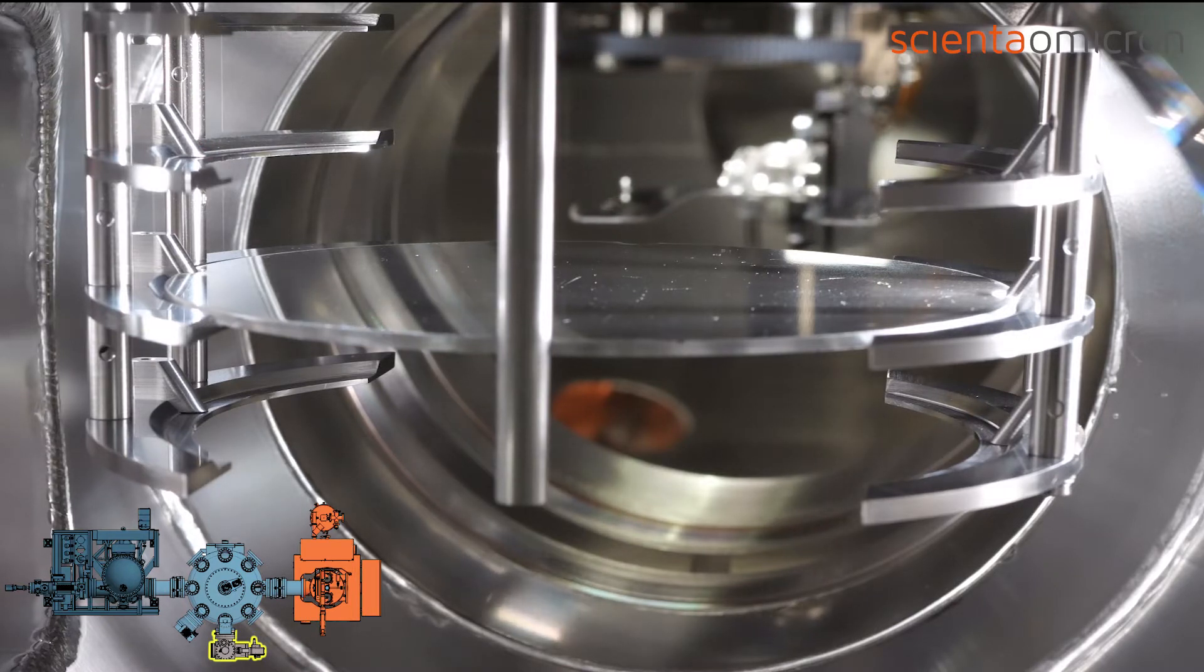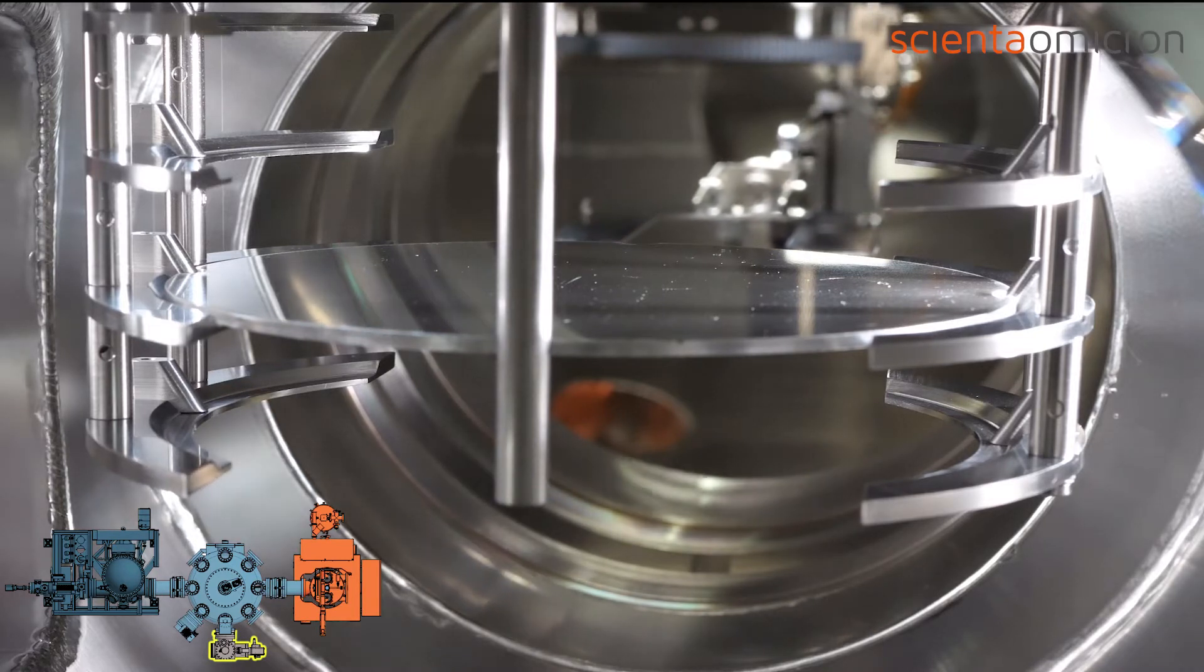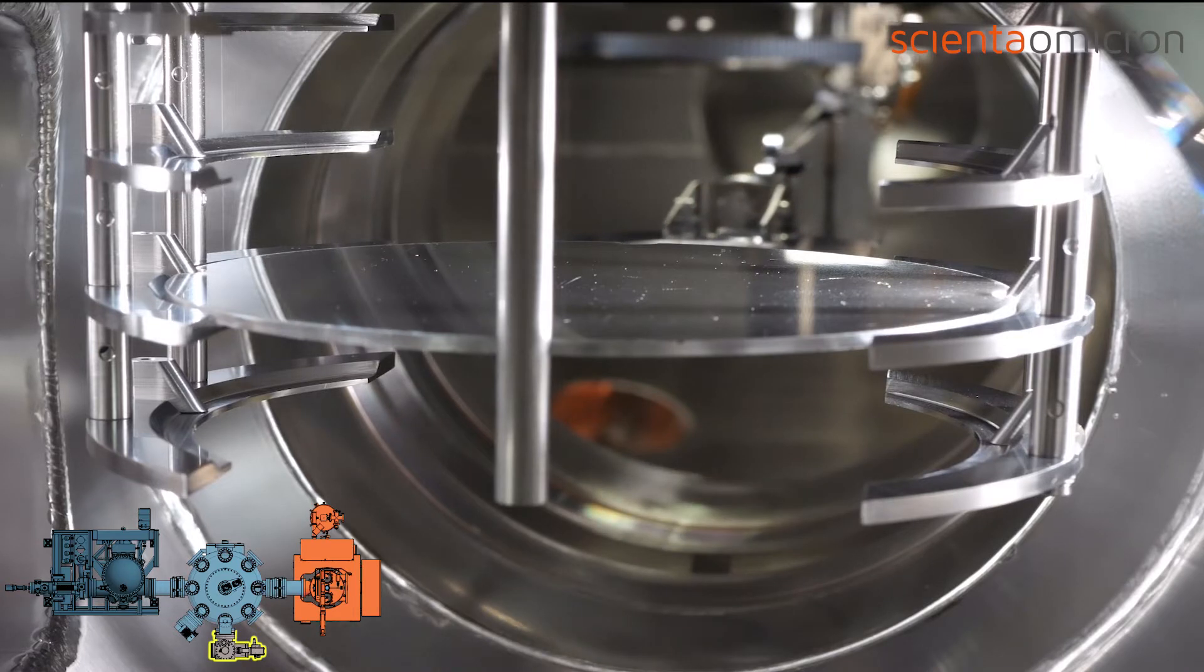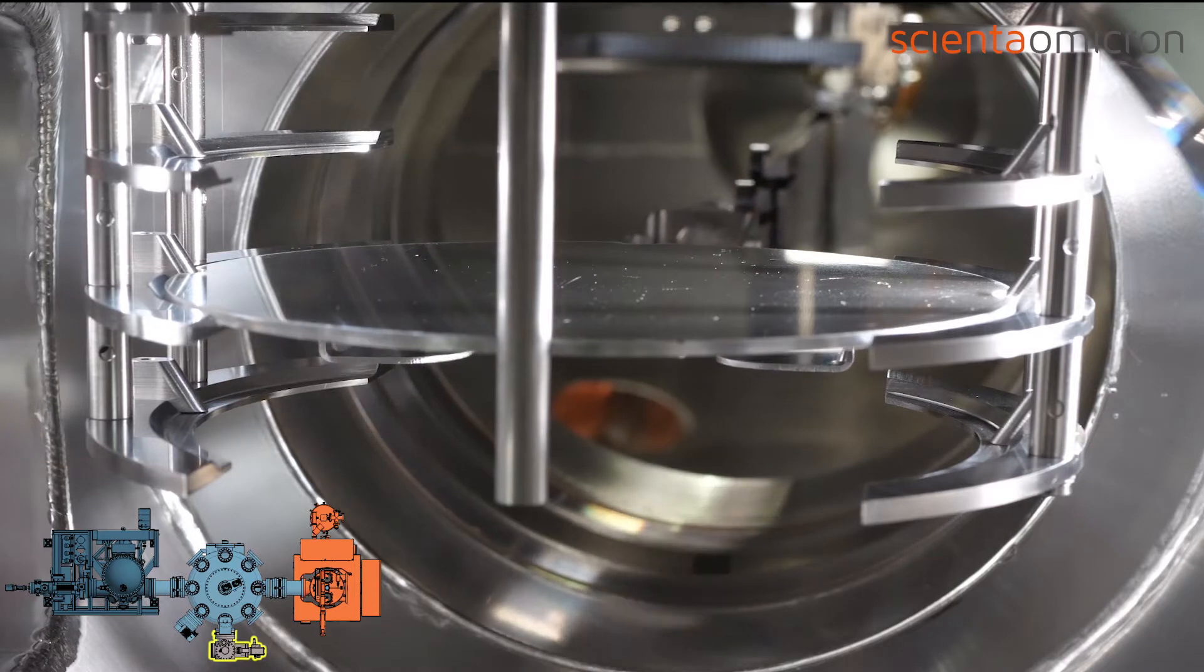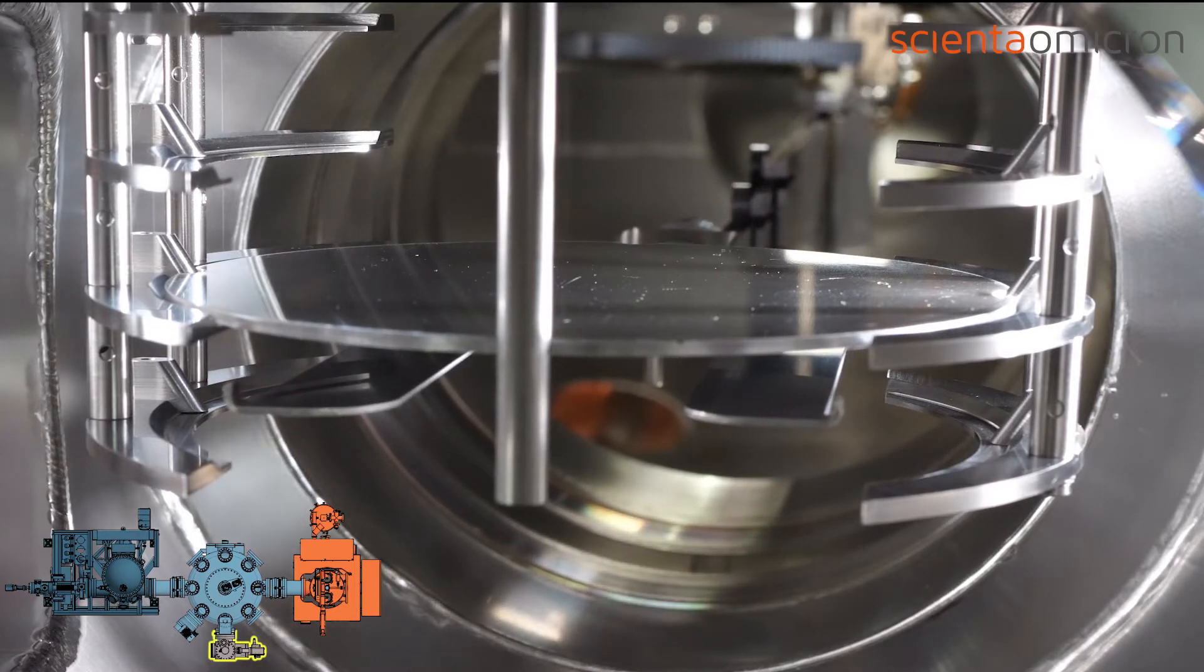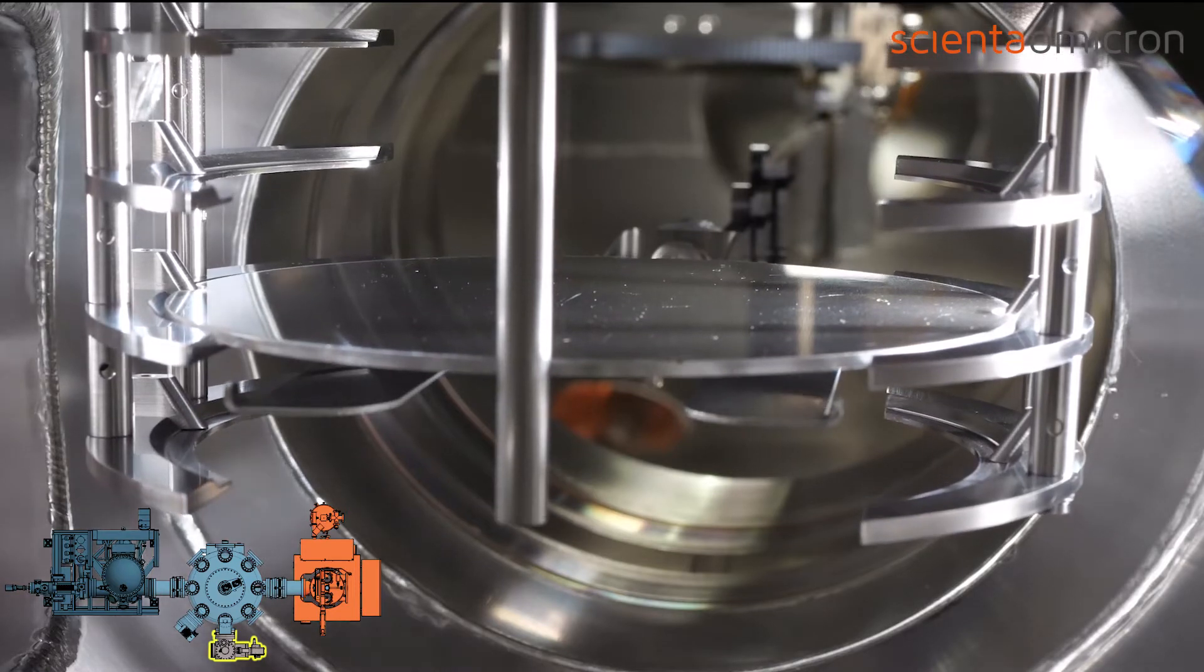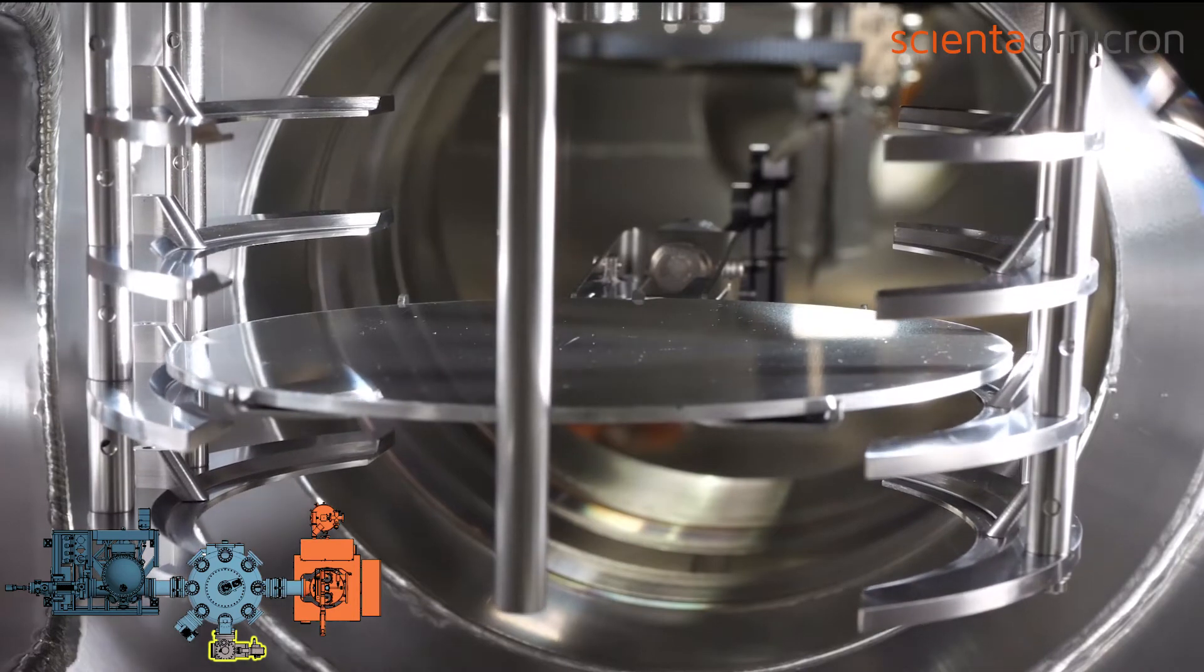The UHV gate valve opens and the wafer fork acceptor, the head of the robotic arm, drives into the chamber. When the fork acceptor is in the reception position, the wafer can be placed on it by lowering the sample storage.